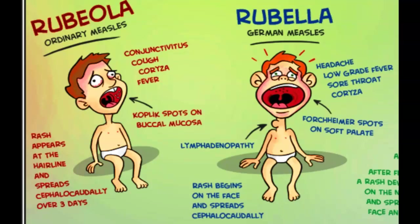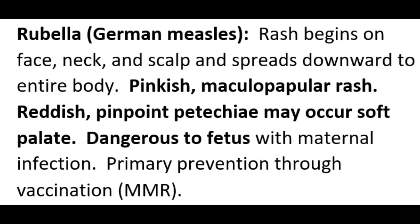As the rash spreads to the trunk, the rash on the face begins to fade. Petechiae, which are red or purple in color and pinpoint in size, may occur on the soft palate. Rubella has relatively few complications; the most common are arthritis and arthralgia. A rare complication is encephalitis.